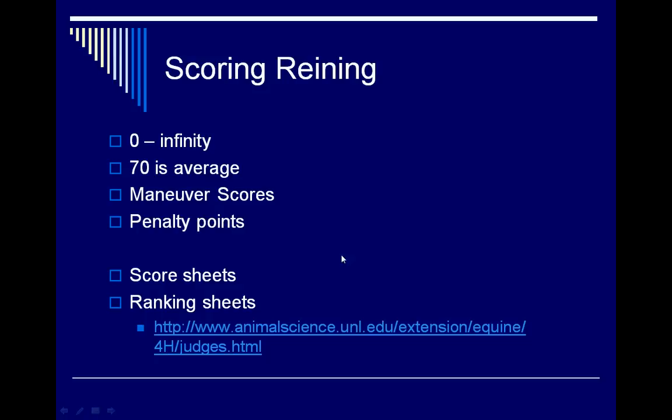This presentation covers how to judge the class of reining. Reining is a scored class that goes on a basis of zero to infinity. 70 is considered an average score, and between the maneuver scores and penalty points, everything is added or subtracted from 70.